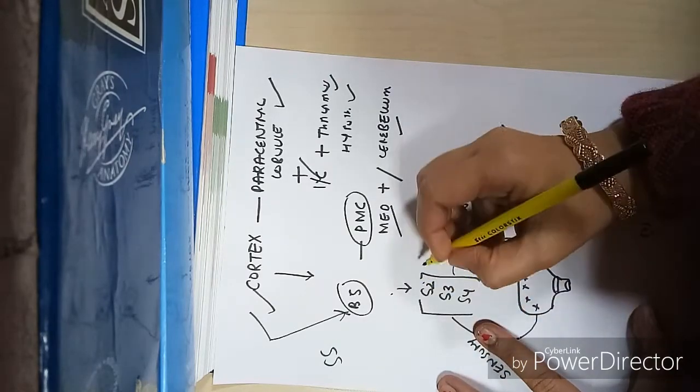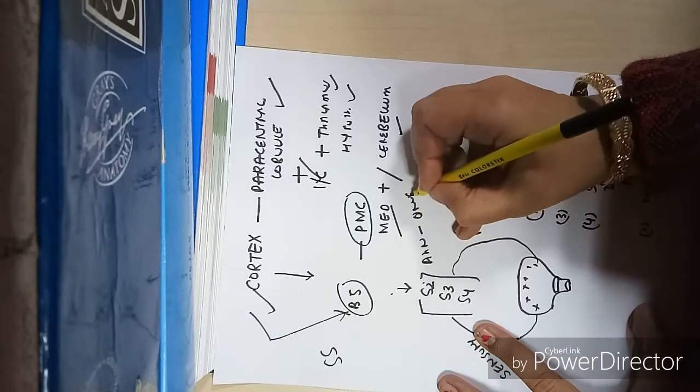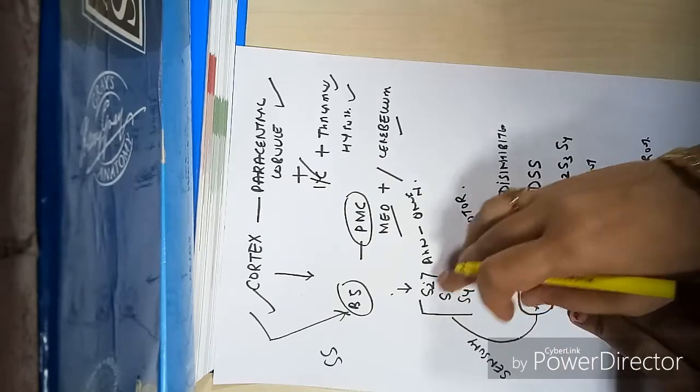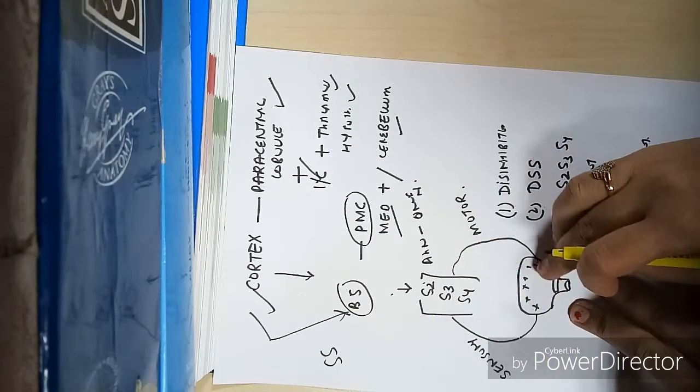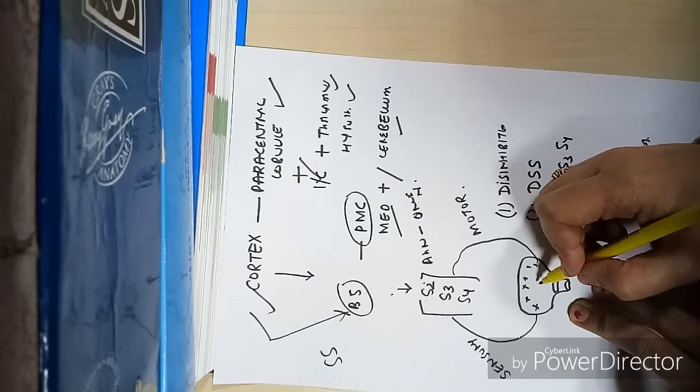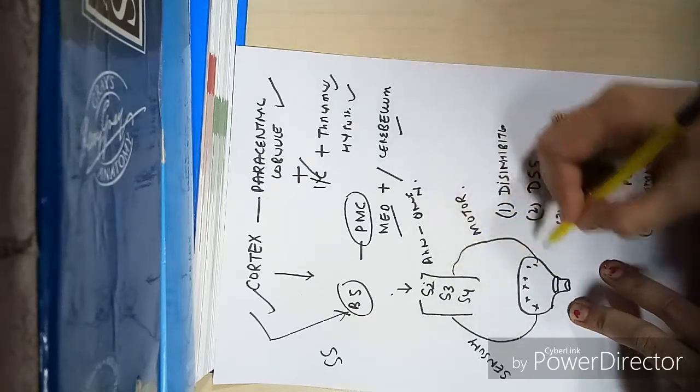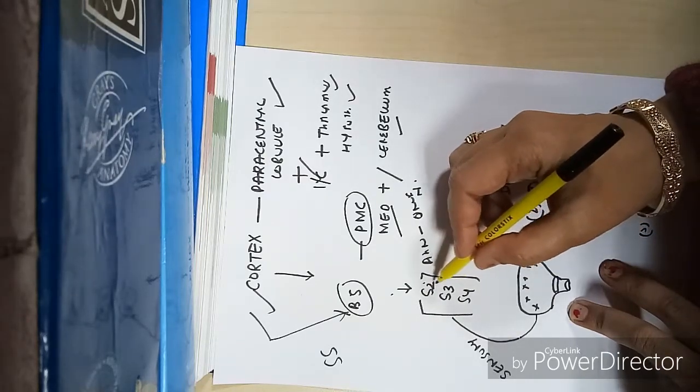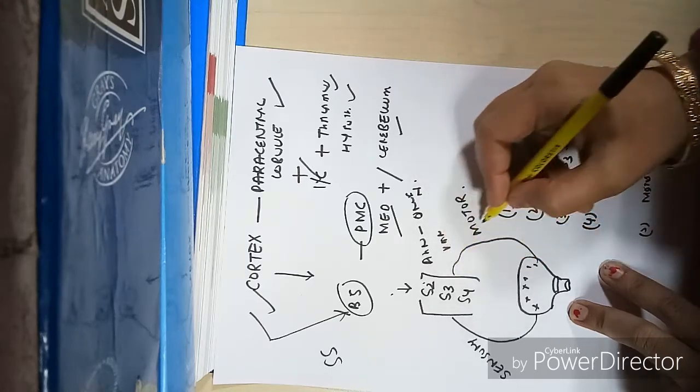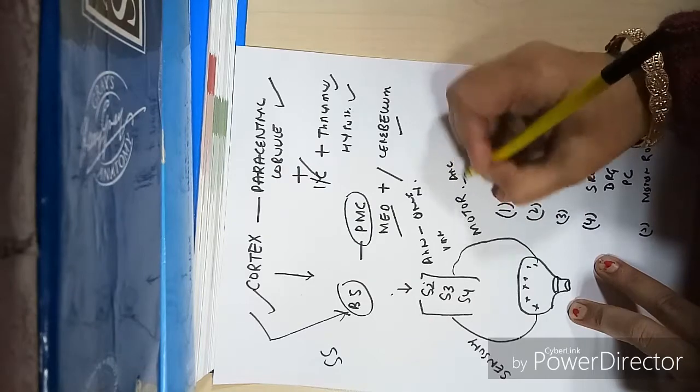Between the bladder and these segments, the nerve roots form the sensory arc carrying feelings of distension and pain to these segments where local control exists. From these roots, the ventral motor root forms the motor arc. We have the sensory arc, motor arc, S2-S3-S4 spinal segments, brainstem, and cortex.